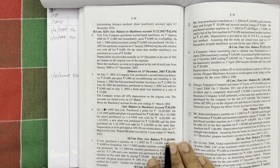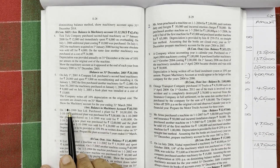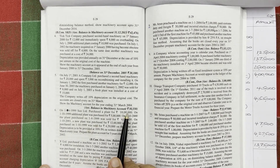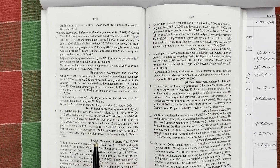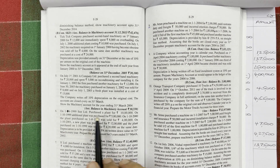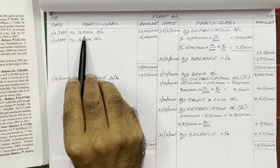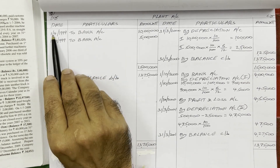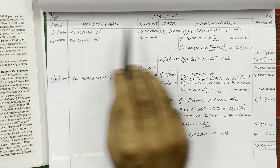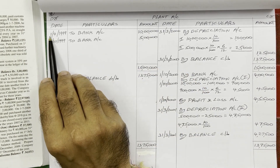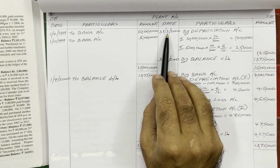Let us see the solution for the plant account. On 1st April 1999, Sun Limited purchased a plant for 10 lakh rupees. On the debit side, we write the purchase date 1st April 1999, to Bank Account, 10 lakh rupees. The first year starting date is 1st April 1999 and the ending date is 31st March 2000.